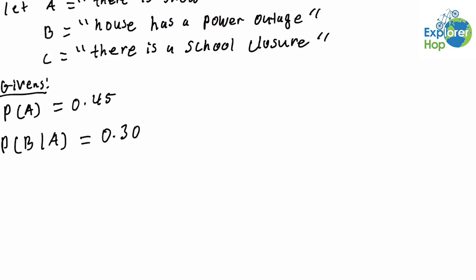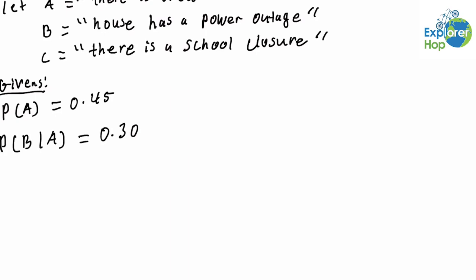And finally, we're told that if the house has a power outage when it snows, then there is an 80% chance that there will be a school closure. So that's the conditional probability of C given A and B, which is equal to 0.8.